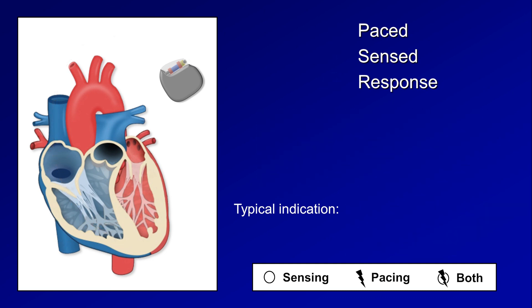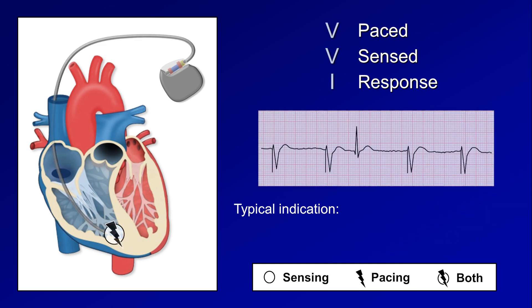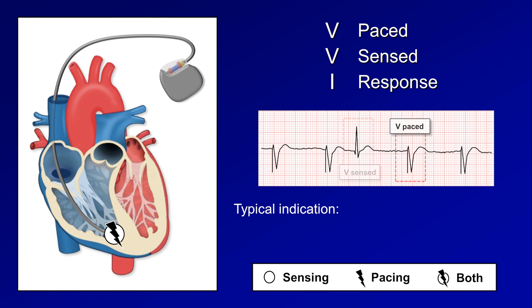The next much more common mode is VVI. In VVI mode, the ventricular lead senses in addition to pacing, and when it senses an intrinsic QRS complex, the response is to inhibit pacing — hence the I. So this narrow QRS complex has been normally conducted through the heart's intrinsic conduction system, the ventricular lead senses this, and therefore doesn't pace right away. But after a duration of time without sensing another intrinsic complex, it does go ahead and pace.